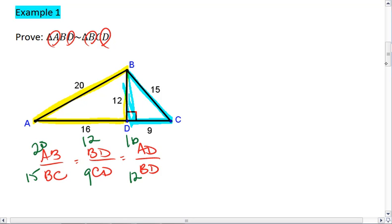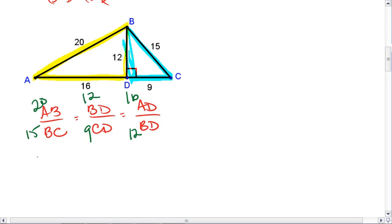All of these ratios reduced to 4 over 3, 4 over 3, 4 over 3. Our sides are proportional. We can do this proof.